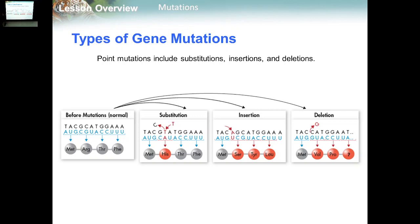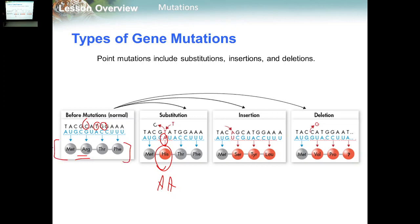Let's start with substitution. The substitution mutation is when one nucleotide is substituted with another nucleotide. This causes a change in the mRNA and, after transcription and translation, a change in the amino acids. For example, changing C into T changes arginine into histidine.